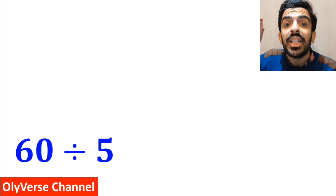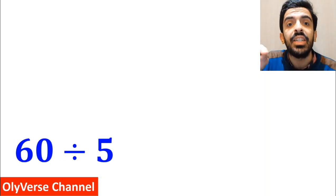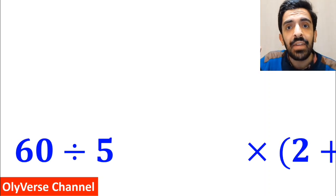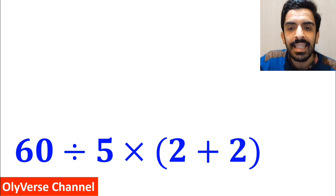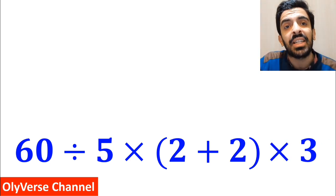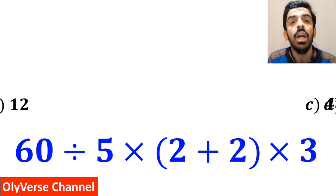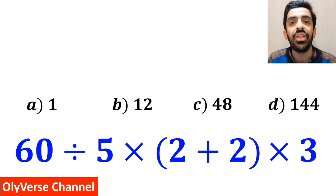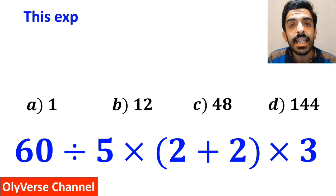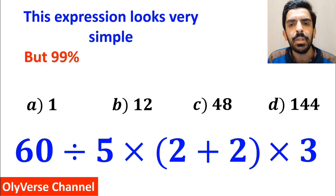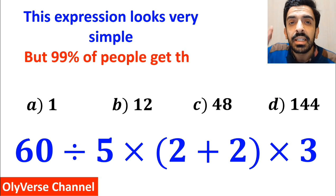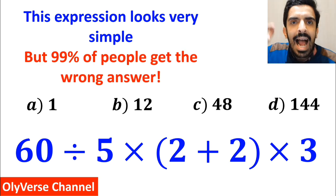What is the value of the expression 60 divided by 5, multiplied by open parenthesis 2 plus 2 closed parenthesis, and again multiplied by 3? Which option do you think is the correct answer to this question? This expression looks very simple, but 99% of people get the wrong answer.